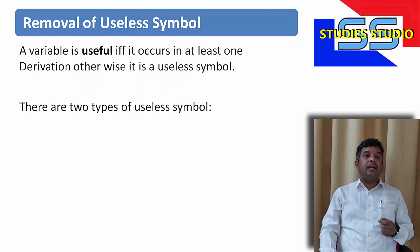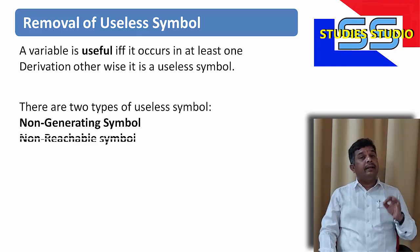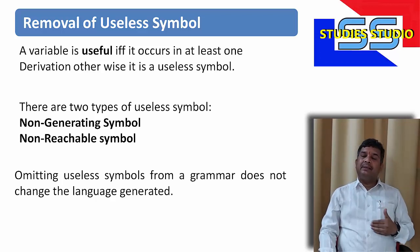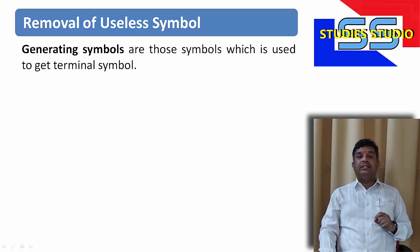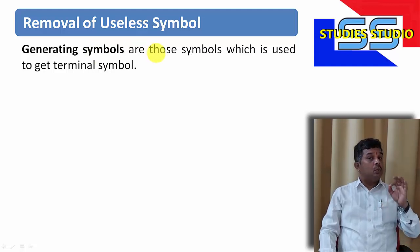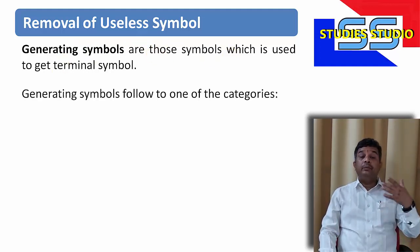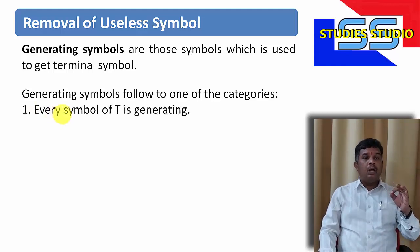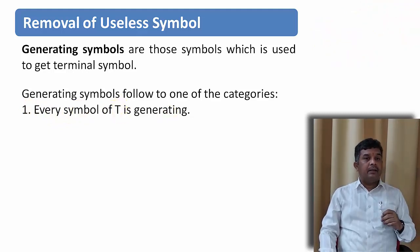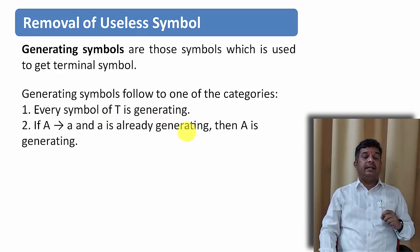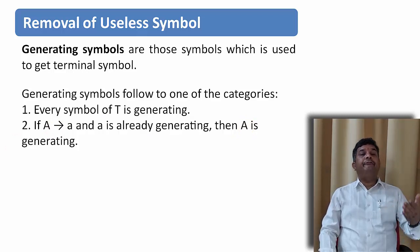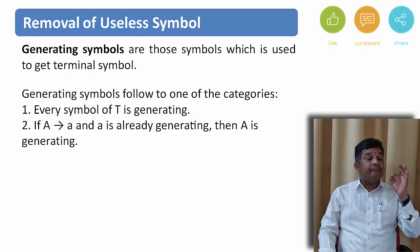There are two types of useless symbols: the first one is a non-generating symbol and the second one is a non-reachable symbol. Omitting the useless symbol from the grammar doesn't change the language the grammar generates. Before learning what a non-generating symbol is, let us first learn what a generating symbol is. Generating symbols are those symbols which are used to get terminal symbols.